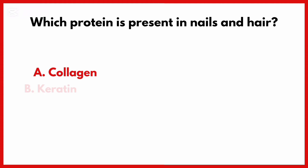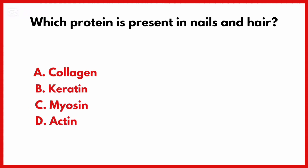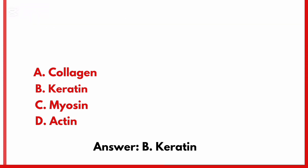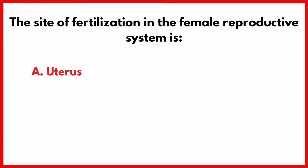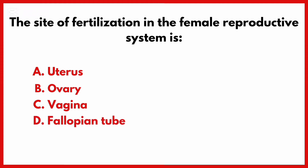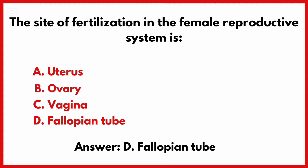Which protein is present in nails and hair? Correct answer is option B. The site of fertilization in the female reproductive system is? Correct answer is option D: Fallopian tube.